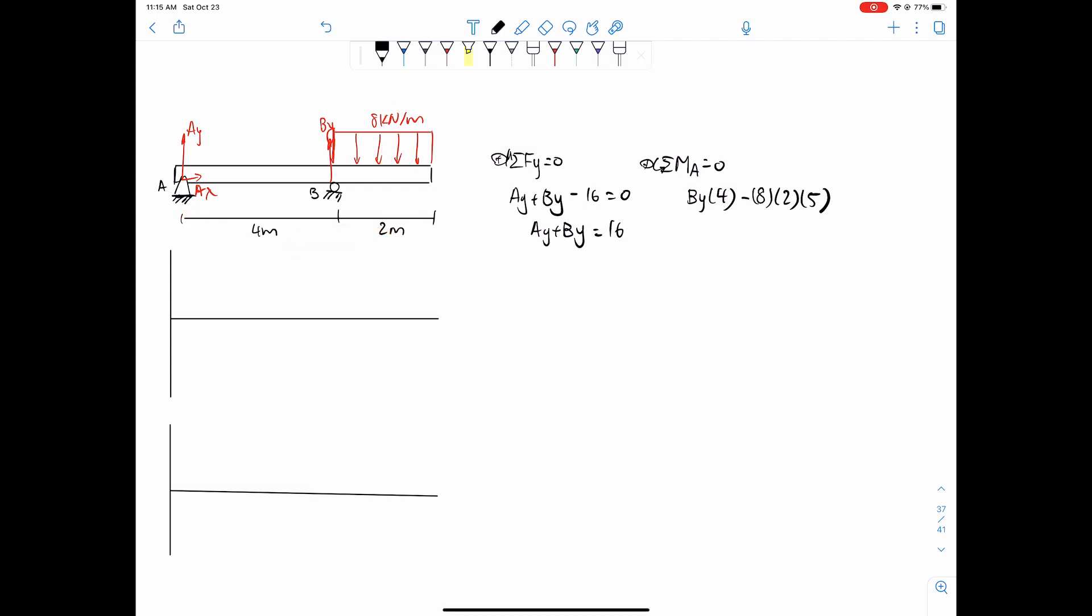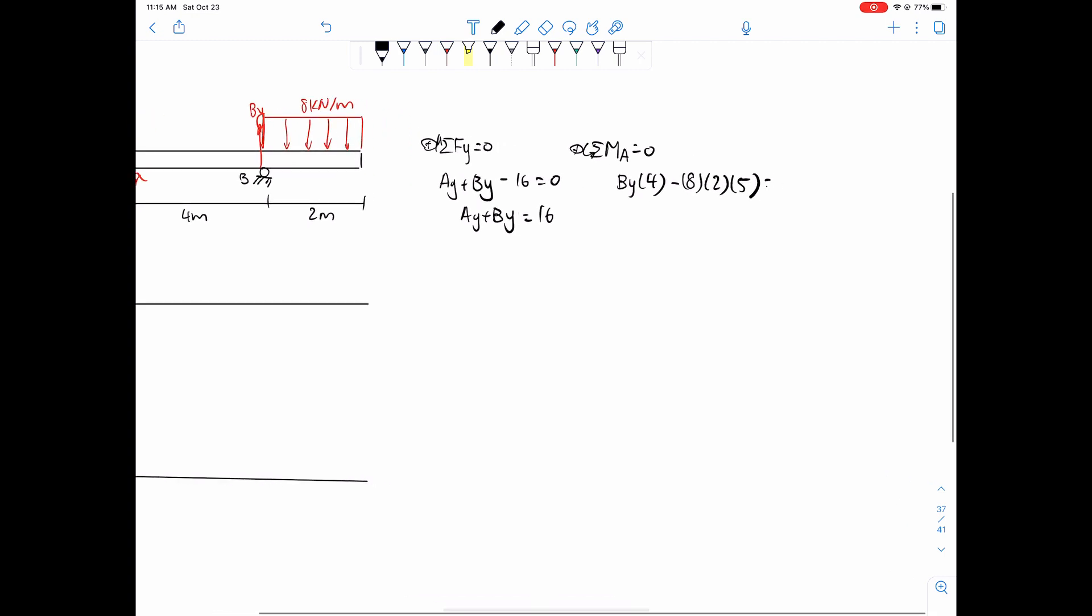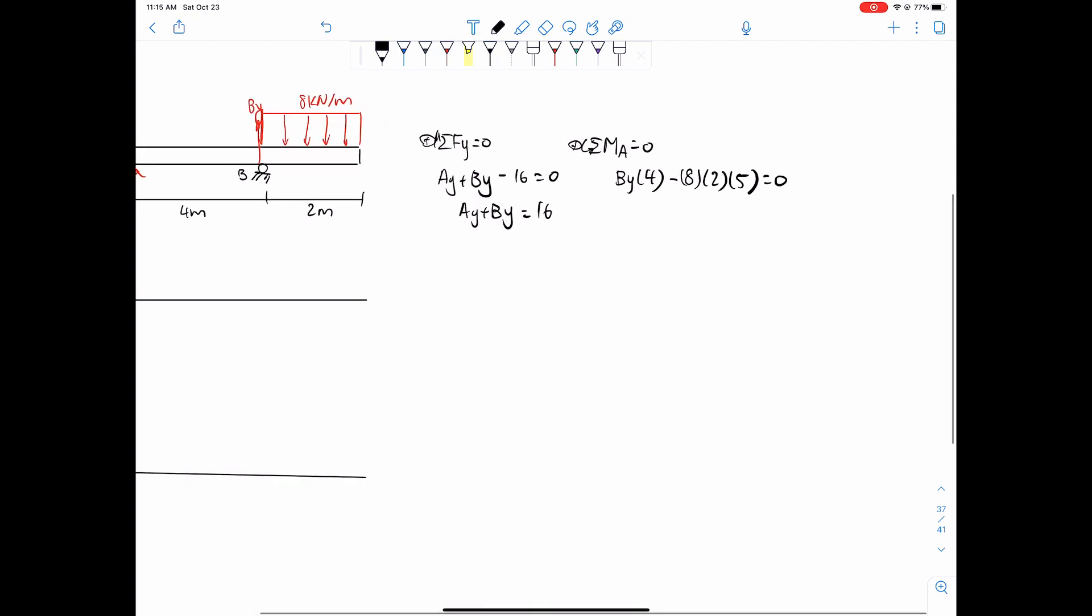We're going quite quick and fast, but if you need more practice, just go back to the previous videos. I go in more depth about that. So 2 times 5, 10 is 80. So 4 By equals 80 and then 80 divided by 4 equals 20. So By equals 20.